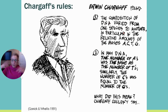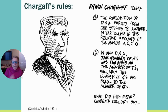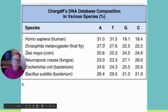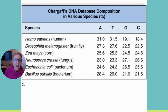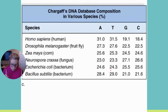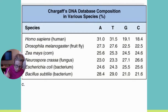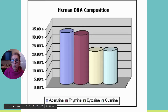Chargaff's rules: rule number one is that the composition of DNA does vary between species — however many adenines humans have is not the same as a fungus or fruit fly. However, within a species, however many adenines you have, you have the same percentage of thymines, and the same goes for guanine and cytosine. He didn't know what this meant, but Watson and Crick could use that information. For example, in Homo sapiens, adenine and thymine are both approximately 31%.